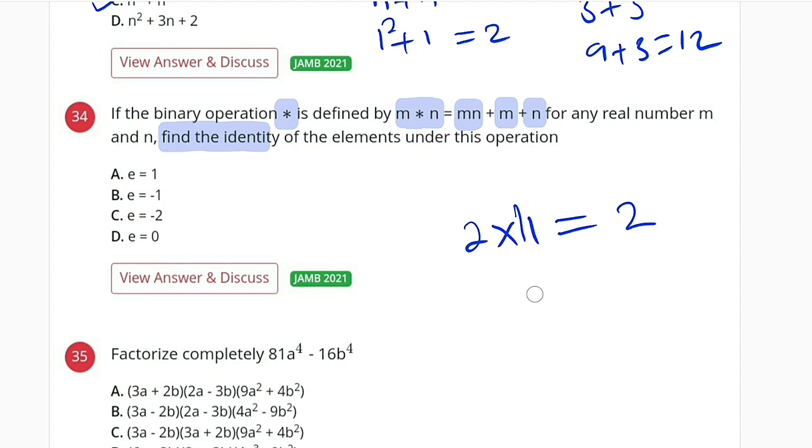Again, if you have 2 plus 0 equals 2, minus 2 plus 0 equals minus 2, and so on. Any number you take and add 0, it is the same thing as that number. Therefore, under addition, 0 is an identity. Let us move on to this question.